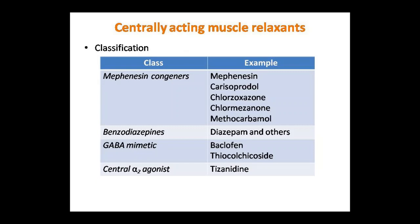Centrally acting muscle relaxants ka classification: Mephenesin congeners mein mephenesin, carisoprodol, chlorzoxazone, chlormezanone, methocarbamol aate hain. Benzodiazepines mein diazepam aur doosri drugs aati hain. GABA mimetics mein baclofen aur thiocolchicoside aate hain. Centrally acting alpha-2 agonist mein tizanidine aata hai.